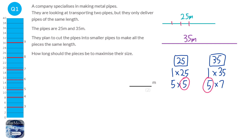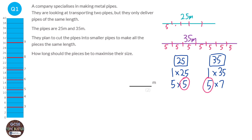The 25m pipe gives us 1, 2, 3, 4 pieces — and then 7 of these from the 35m pipe: 1, 2, 3, 4, 5, 6, 7 in total. Each of these are 5m long, and there's no wastage. That's the longest we can make the pipes for there to be no wastage at all. So my answer is 5m.